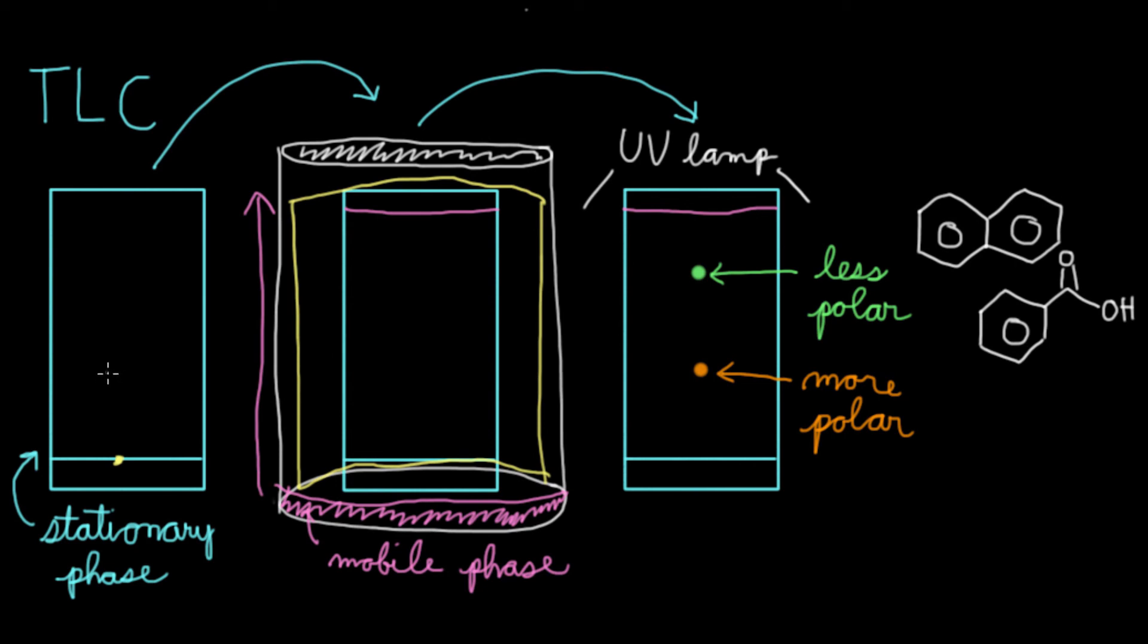As you can see, naphthalene is just made out of carbons and hydrogens. So it's pretty nonpolar. So we can indicate that this corresponds with this. And because of the carboxyl group in the benzoic acid, this group right here, you can tell that it's a pretty polar molecule. So this would correspond to this.